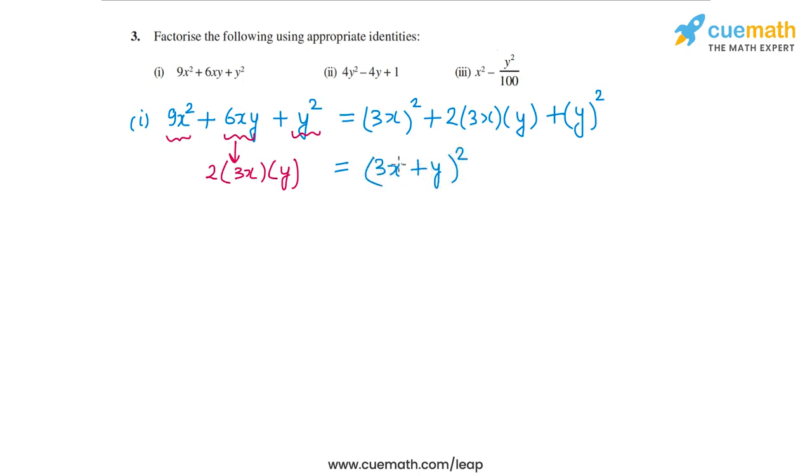So this is the factored form of this expression. 3x plus y times 3x plus y is the factored form of the first expression. Now let's go to the second part.